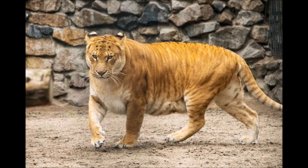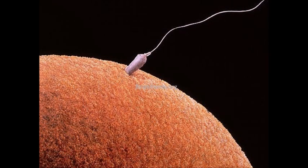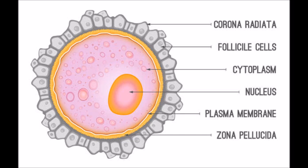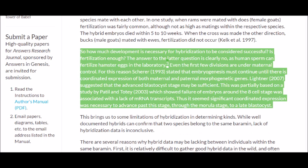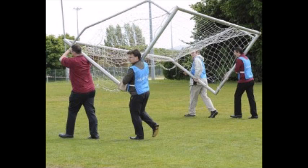One of the most popular methods is hybridization, which involves crossing two species. If the species can produce offspring, fertile or infertile, then the two are part of the same kind. But what if they can only fertilize the egg? That's not okay, since humans can fertilize hamster eggs when the zona pellucida is removed. Gene Leitner, Tom Hennigan, Georgia Purdom, and Bodie Hodge point out in 'Determining the Ark Kinds' that the zygote must reach the blastocyst stage before the two can be considered the same kind. Did you hear the sound of those goalposts moving?